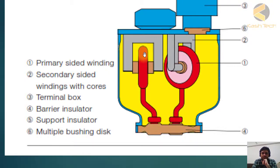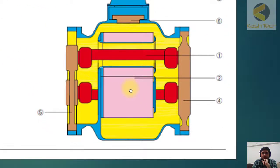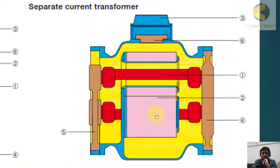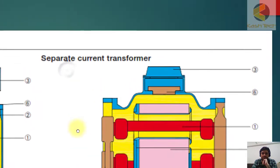This VT has its own gas compartment. Then you have support insulators and multiple bushing discs. Here we have shown a resin-type current transformer. You can see easily this is the winding, this is the terminal block, these are the barrier insulators. This CT also has its own compartment.